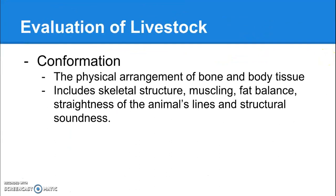Conformation is the physical arrangement of bone and body tissue — just a fancy way of saying how their body is put together, how their anatomical parts work. This includes things like skeletal structure, muscling, fat, balance, straightness of the animal's lines, and structural soundness.